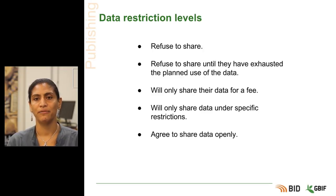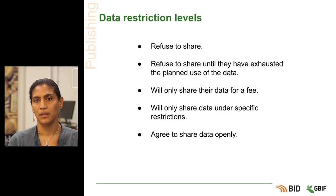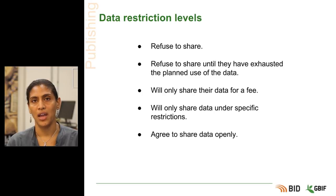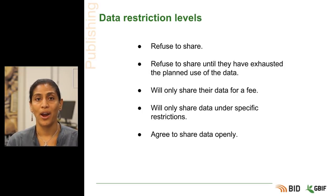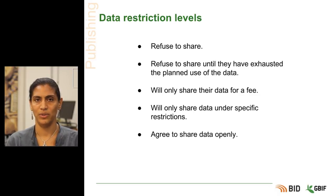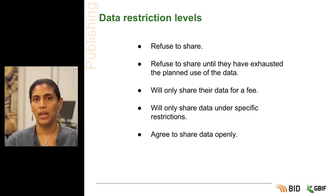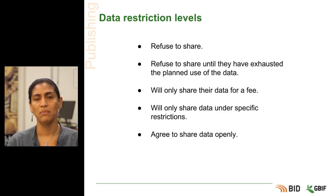It is sometimes, however, perfectly valid for a dataset to be restricted. These caveats and restrictions include dealing with taxa that are rare and or endangered in some way. Another example is the sharing of human remains data. These restrictions should always be discussed with the data owner. Prior to publishing, they should be agreed and documented. Remember that you may need to compromise with data owners, so starting with a smaller set of records or fields that can be shared openly is often a way to start the process.